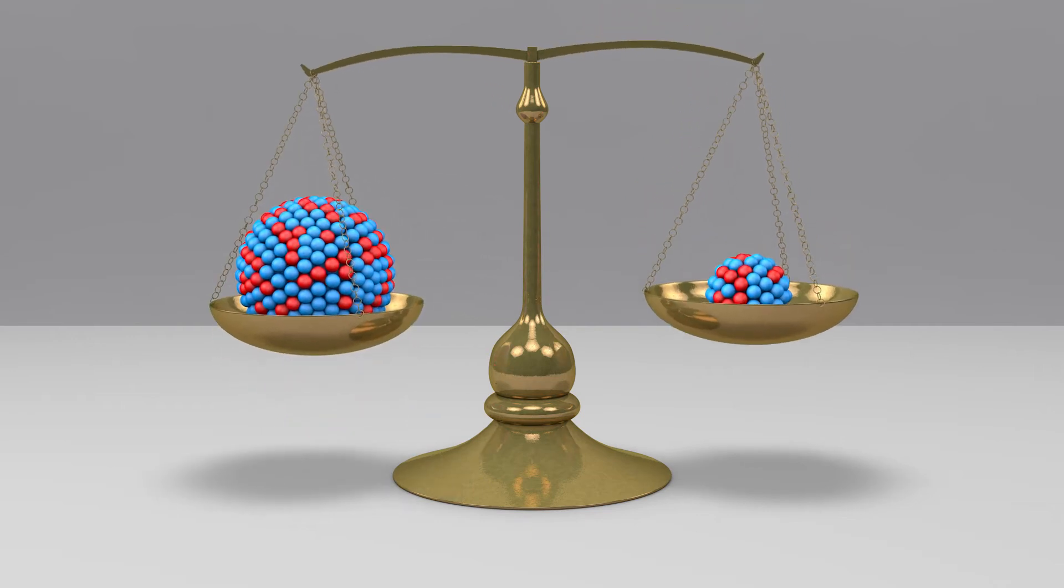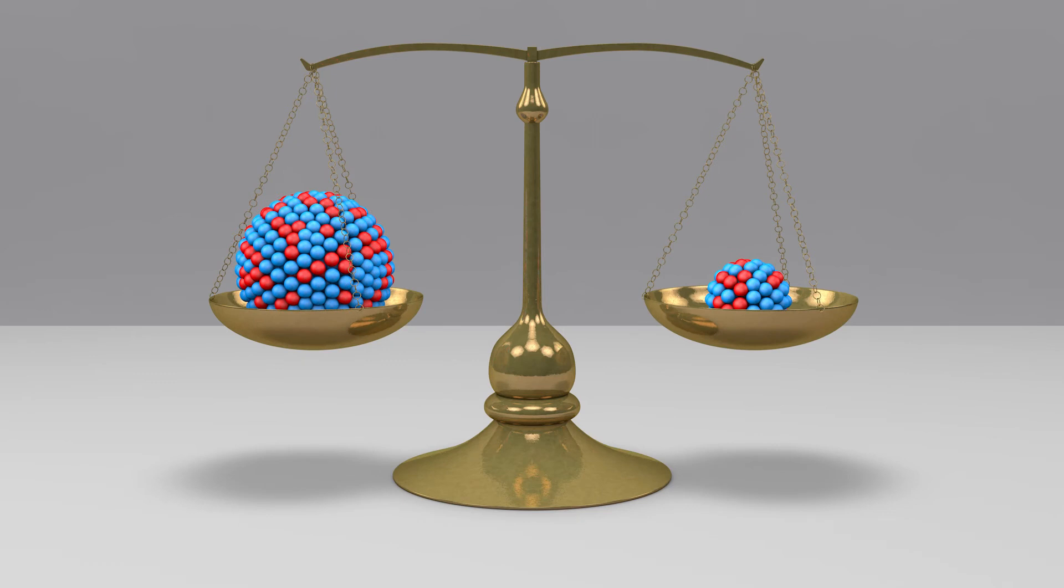then these objects should balance, because they have the same density. That's why mass is the factor and not density.